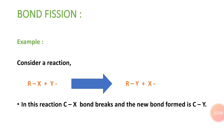Let's take an example. Consider a reaction: R–X + Y⁻ is the reactant, and when it reacts it gives R–Y + X⁻. Here we can see the bond between R and X gets broken, and a new bond between R and Y gets formed. So in this reaction, the C–X bond breaks and the new bond formed is C–Y.